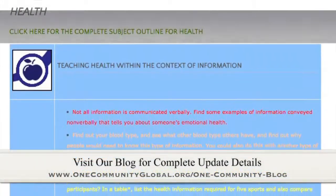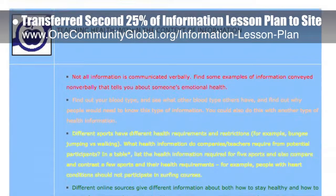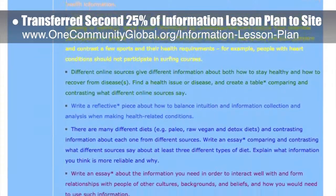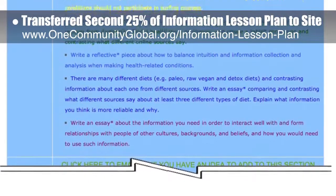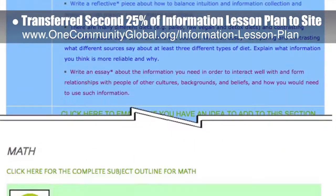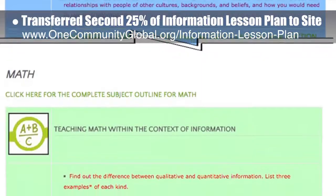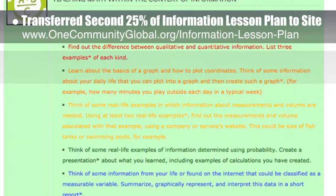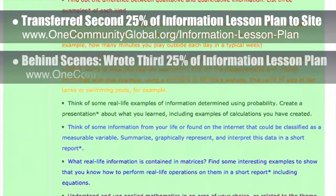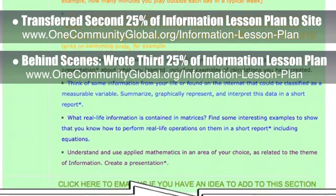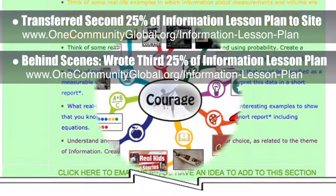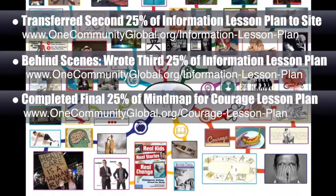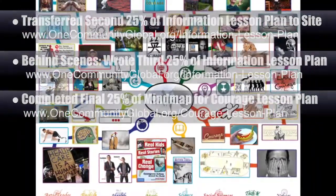This week, the core team — which includes the Pioneer members plus those helping who don't wish to be individually acknowledged — transferred the second 25% of the written content for the Information lesson plan to the website. This lesson plan, purposed to teach all subjects to all learning levels using the central theme of information, is now 50% complete on our website. Behind the scenes, we wrote the third 25% of the written part of the Information lesson plan. We also completed the final 25% of the mind map for the Courage lesson plan, bringing it to 100% complete.